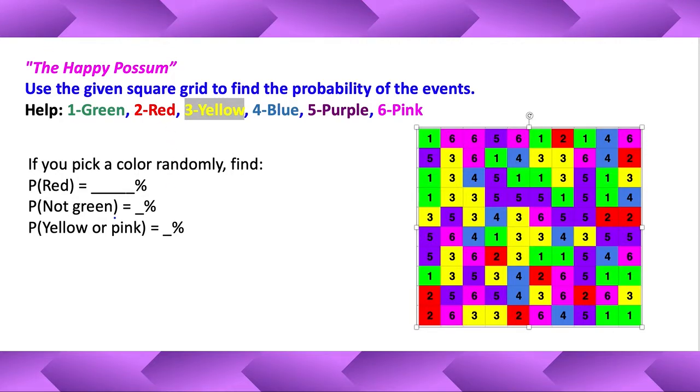Hello students, let's do the happy possum. Use the given square grid to find the probability of the events. Number ones are green, number twos are red, number threes are yellow, number fours are blue, number fives are purple, and number sixes are pink. So to help with the number search, I've color-coded them a little bit. Here we go.